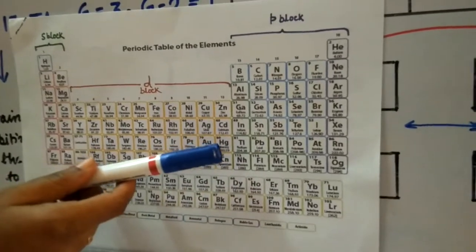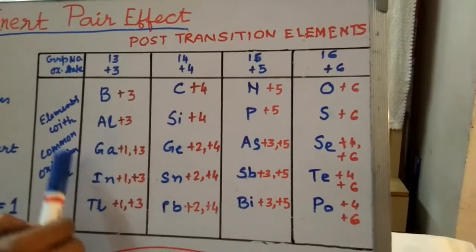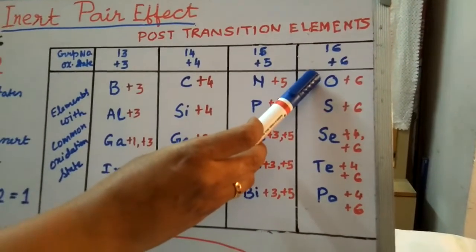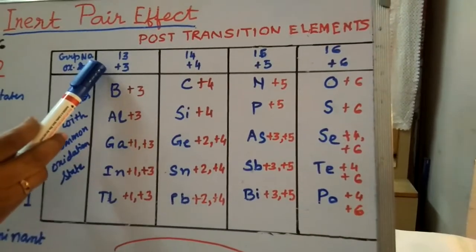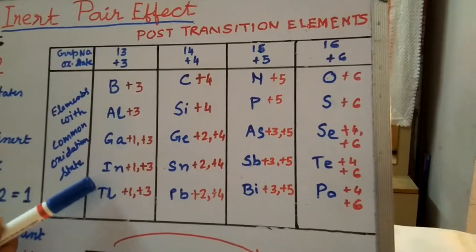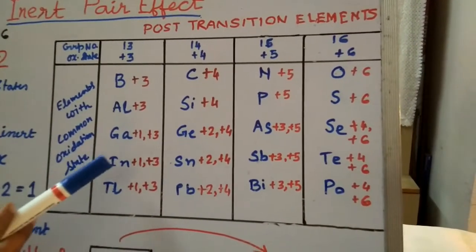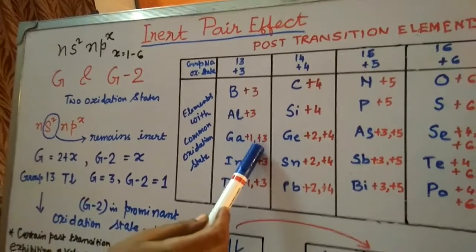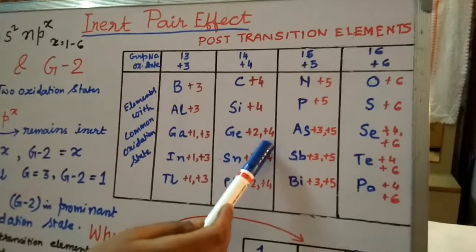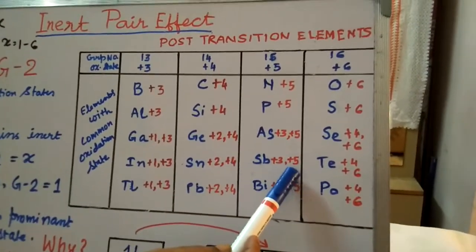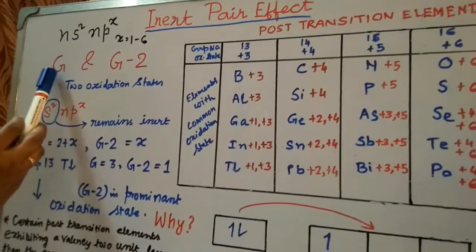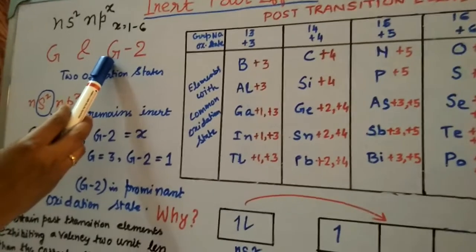What is the inert pair effect? For groups 13, 14, 15, and 16 we have the group oxidation state: group 13 is +3, group 14 is +4, group 15 is +5, and group 16 is +6. Along with this group oxidation state, heavier elements show another oxidation state which is 2 less than the group oxidation state. So group 13 shows +1 along with +3, group 14 shows +2 along with +4, group 15 shows +3 along with +5, and group 16 shows +4 along with +6. That is, if the group oxidation state is G, it will also show G minus 2.